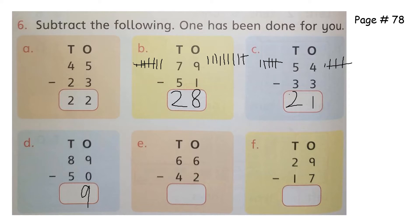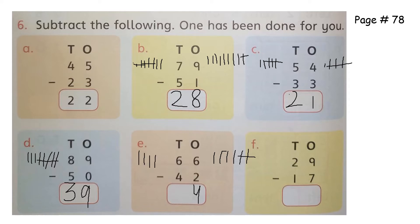One, two, three, four, five, six, seven, eight — five — how much is left? Three. One, two, three, four, five, six — and we have to cut two — how much is left? Four.